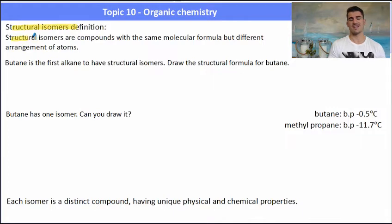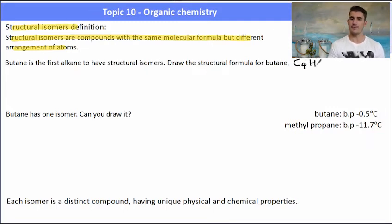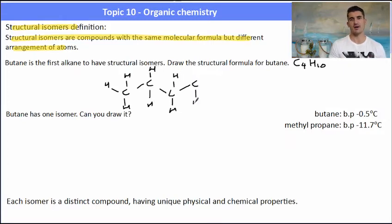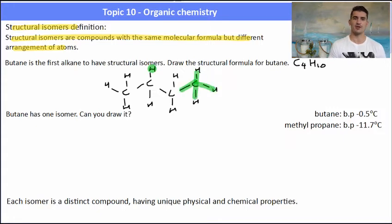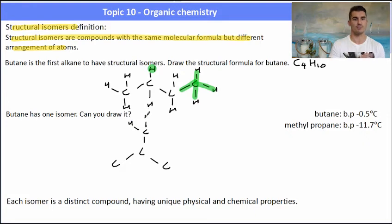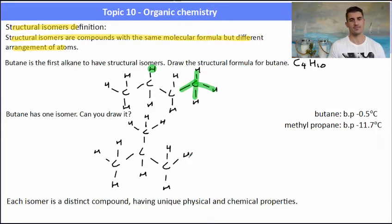Structural isomers are compounds with the same molecular formula but a different arrangement of atoms. Butane is the first member of the alkane series to have structural isomers. The first isomer is the easiest — the straight chain isomer with four carbons in a row and hydrogens above and below. To draw a different arrangement, think about swapping a hydrogen for the CH₃ group at the end of the chain. Now we have a CH₃ group in place of that original hydrogen — this gives us a branch. The molecule still has the same molecular formula but a different structure.